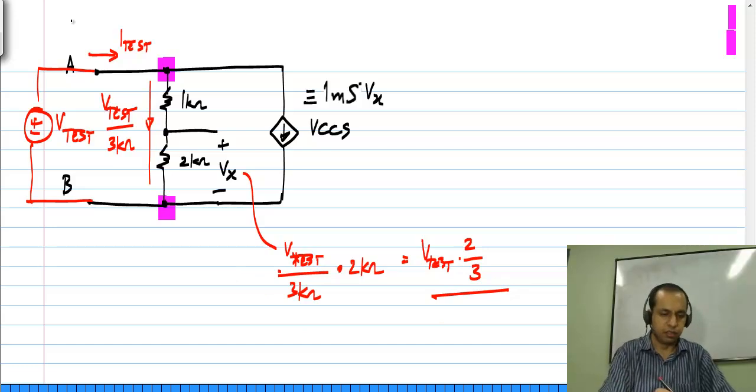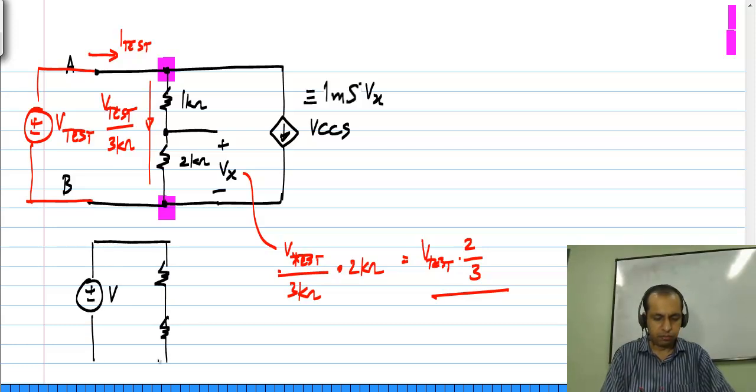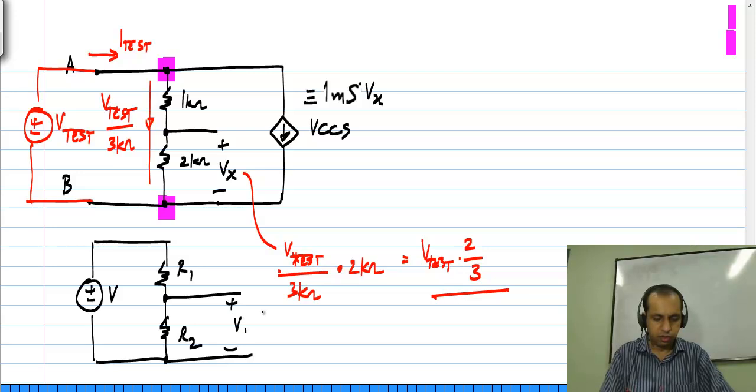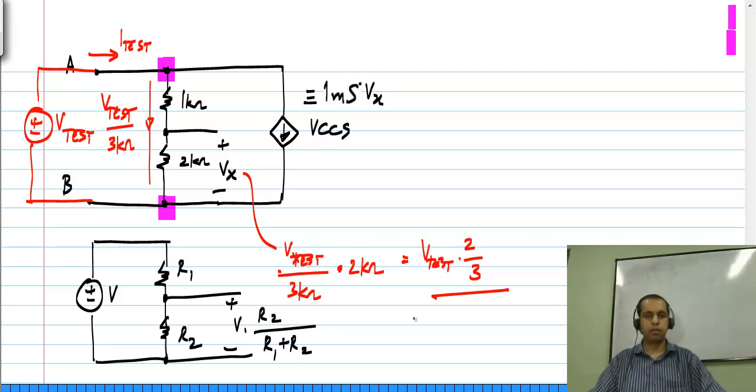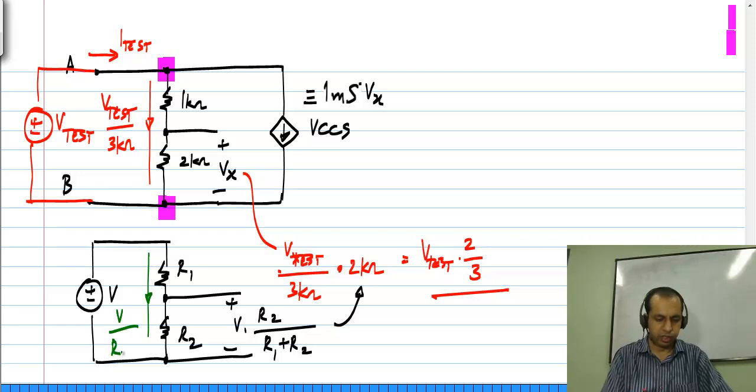This is nothing but the voltage divider formula which you are most likely familiar with. If I have V and R1 and R2, the voltage across R2 is V times R2 divided by R1 plus R2. That is exactly what I get and the way to derive this formula is to realize that current through this is V divided by R1 plus R2 and that current times this resistance is the voltage across R2.